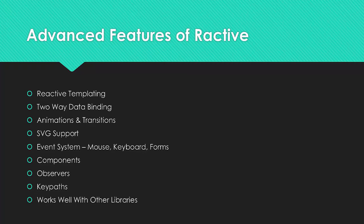We also have observers, which give us a publish and subscribe mechanism for reactive data. Key paths are the main way to interact with a reactive instance — essentially a string that represents the location of a piece of data. Don't worry if all of this sounds like gibberish. We'll be going over this stuff pretty slowly, and seeing actual code examples will be much better than just explaining it. This is just an overview of what's to come.